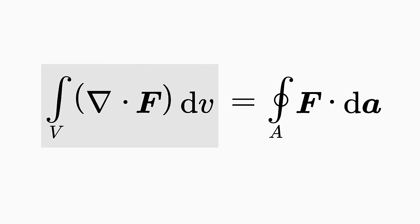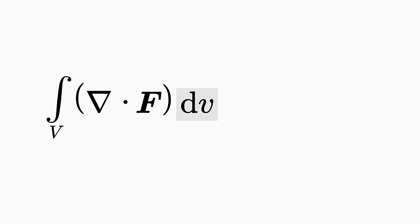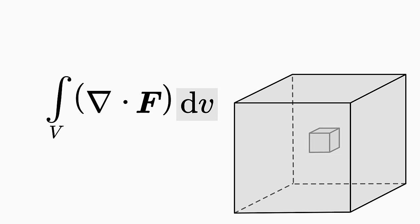Now let's look at the left-hand side of the theorem. V is a volume — but not any volume — it is the volume enclosed by the surface A. dV is an infinitesimal volume element, in other words, an infinitely small volume piece of the considered volume V.